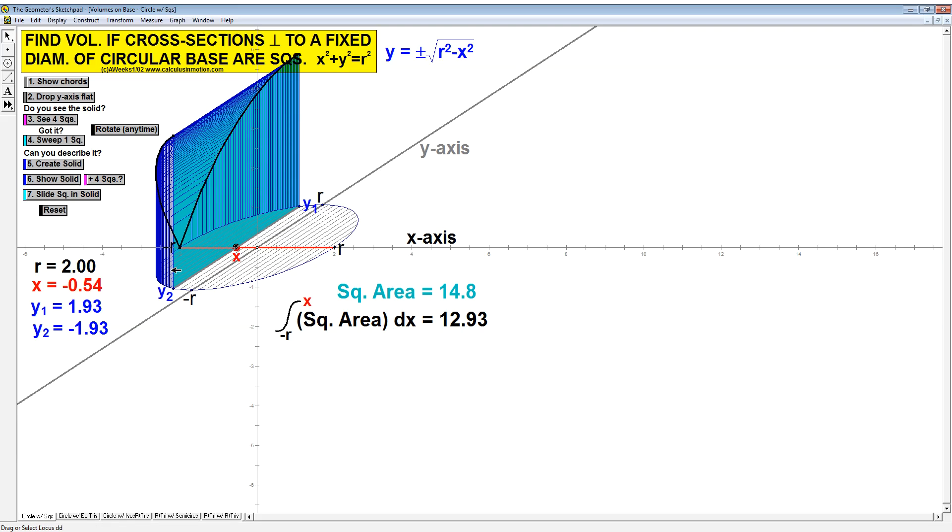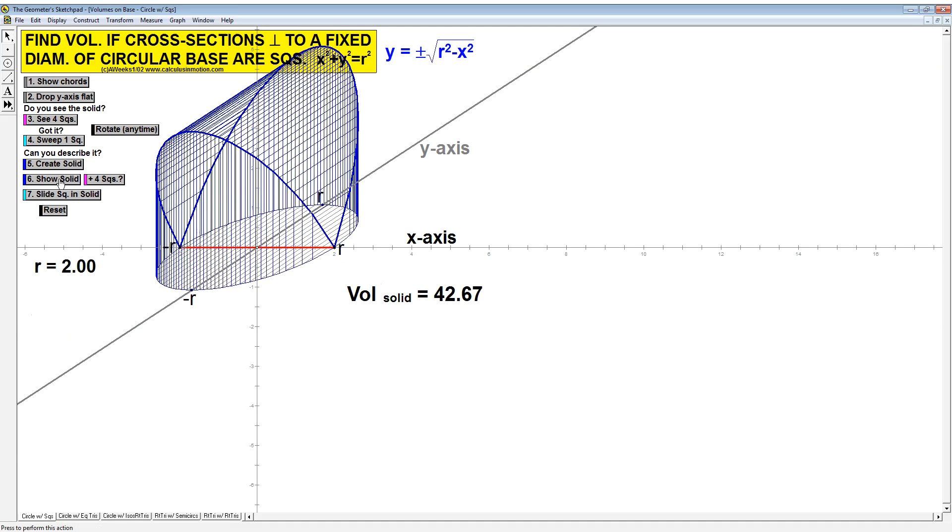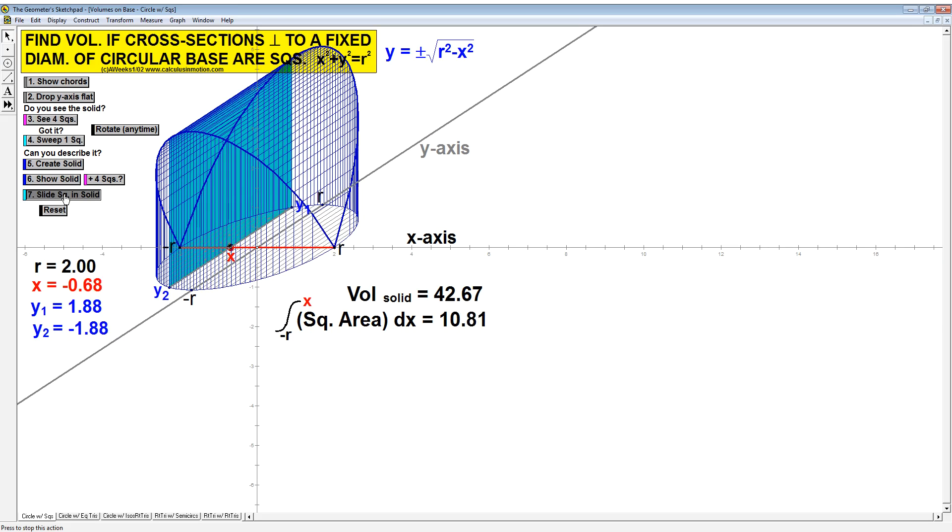It's just a whole bunch of squares, one right after the other. We do the entire solid, that's what we end up having. We can actually find the volume of this solid using calculus. You'll see the square kind of work its way through that solid. This is the idea: we have a whole bunch of squares coming up from our base.